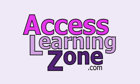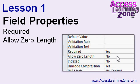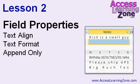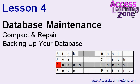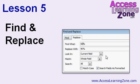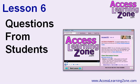Now let's take a closer look at exactly what's covered in today's class. We started learning about field properties in Access Beginner Level 3. In Lesson 1, we will continue learning about field properties — specifically the required and allow zero length properties. In Lesson 2, we'll spend some time with memo fields, talking about the text align, text format, and append-only properties. In Lesson 3, we'll cover a few of the lesser-used properties, and then spend a lot of time covering one of the most important properties: indexing. In Lesson 4, we're going to talk about some database maintenance issues — compact and repair, and backing up your database. In Lesson 5, we're going to learn about the find and replace features. In Lesson 6, I'll answer some questions from students.